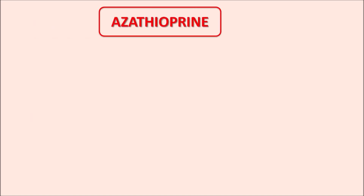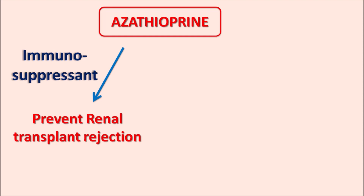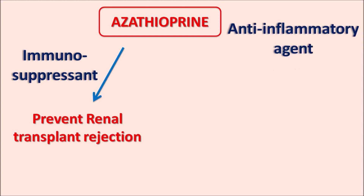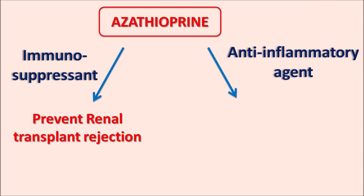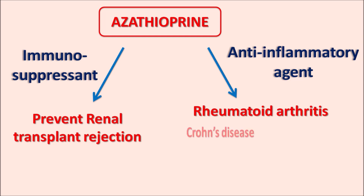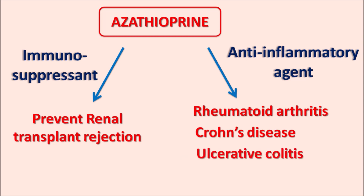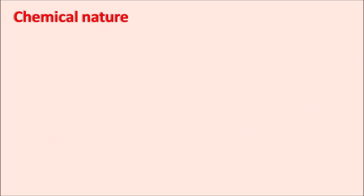Azathioprine has two types of activities. First, as an immunosuppressant, it is used to prevent renal transplant rejection by inhibiting T-cell activity, thereby suppressing host immunity. Second, it is used as an anti-inflammatory agent in the treatment of rheumatoid arthritis and inflammatory bowel disorders such as Crohn's disease and ulcerative colitis.